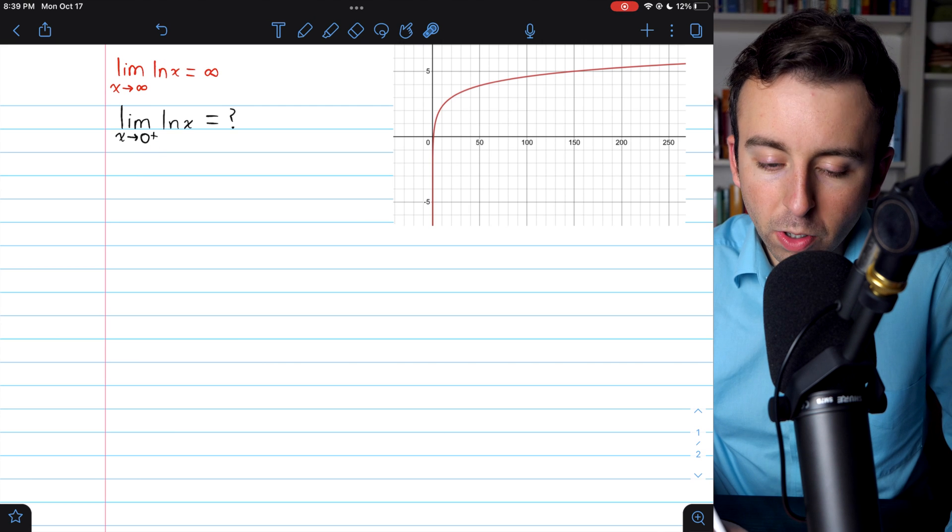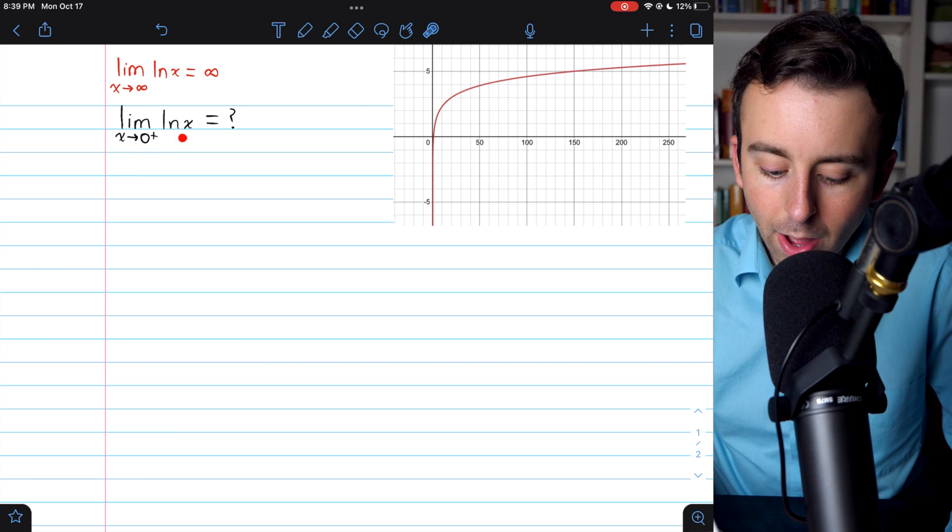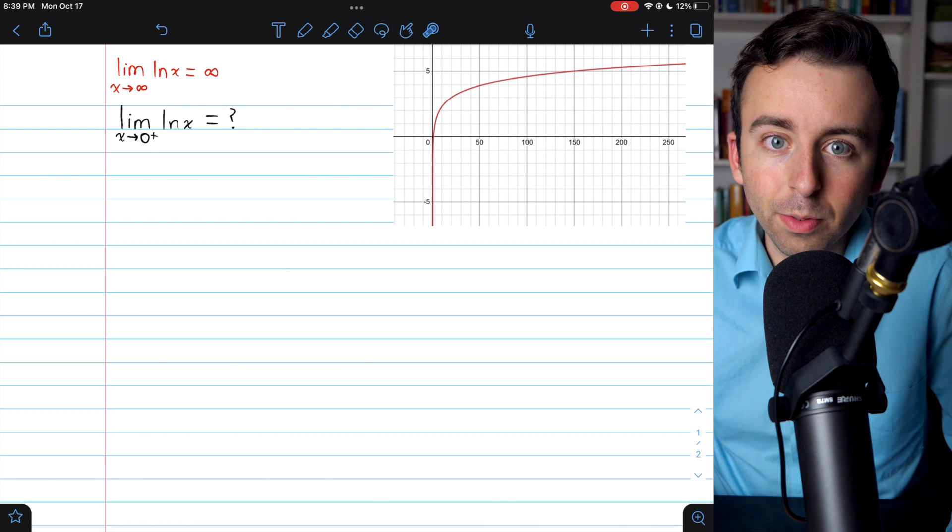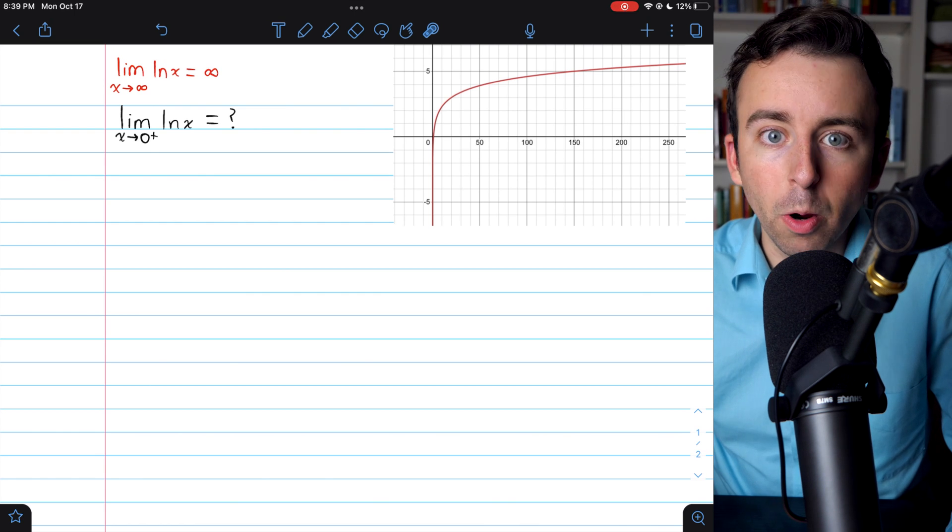Of course, 0 is approaching from the right because natural log is undefined for any number that's not positive. So we need to approach 0 from the right.